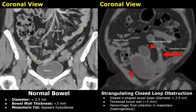In this image you can see a dilated ileum with a thickened bowel wall, and a transition point is also seen here. This coronal view is of the same case shown in axial view previously. Mesenteric congestion was seen in axial view, which indicates small bowel ischemia — meaning it is a strangulating closed loop obstruction. The dilated bowel loops are U-shaped.